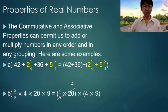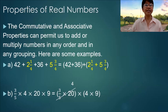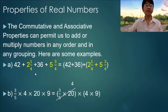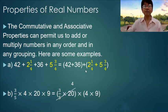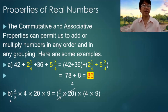The commutative and associative properties permit us to add or multiply numbers in any order and in any grouping. Here are some examples. Letter a: 42 plus 2 and 1/4 plus 36 plus 5 and 3/4. We have two whole numbers grouped together and two mixed numbers grouped together so that the addition will be easier, and the answer is 78 plus 8 is equal to 86.